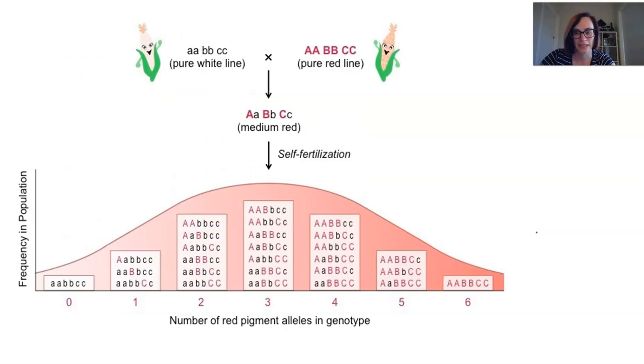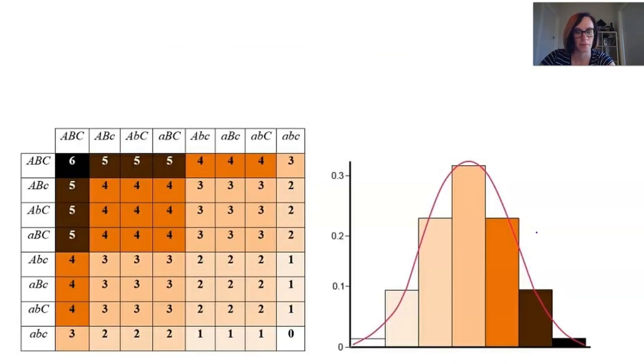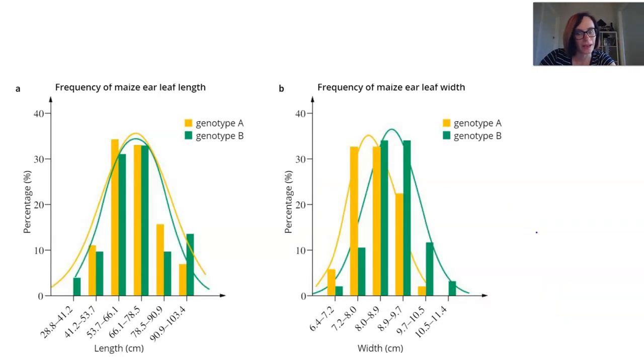Some other really good examples of polygenic inheritance outside of human height include wheat grain color and skin color as well. This distribution is all about corn ear length and width, and by studying these types of frequencies, scientists can decide which crops to crossbreed to get the ideal offspring to plant and harvest. It is really important to understand all these different frequencies and possibilities in a genetic cross.